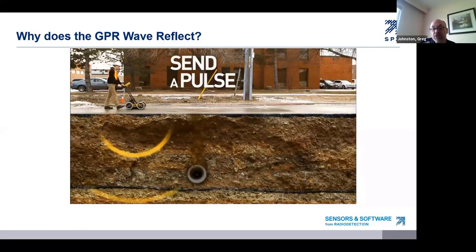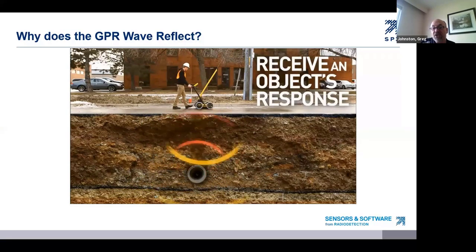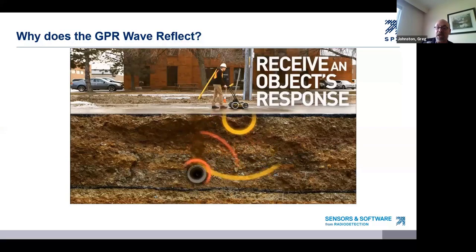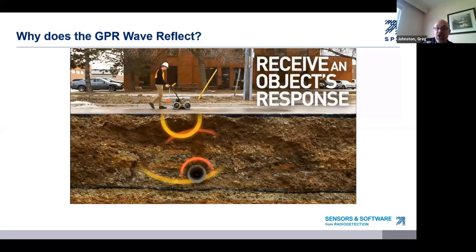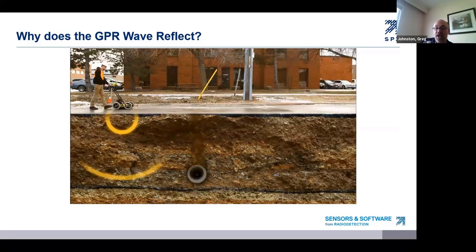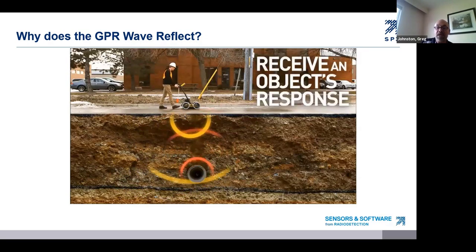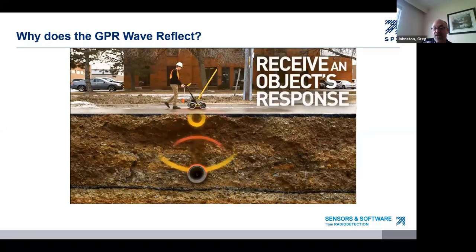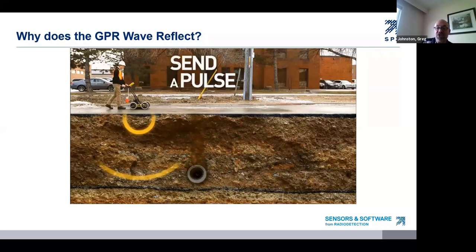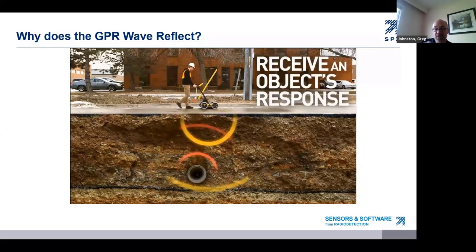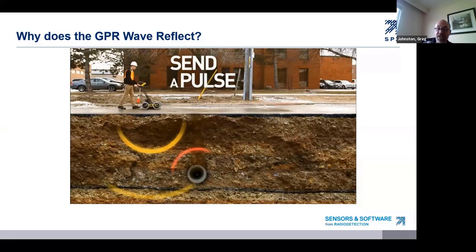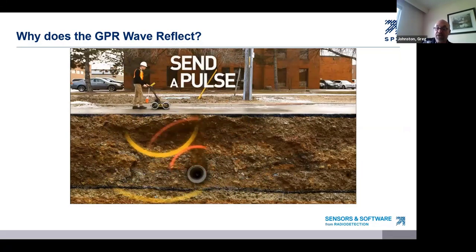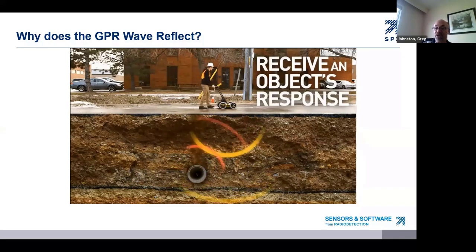Now, why does the GPR pulse reflect from a subsurface object? GPR waves reflect when there is a contrast of materials — specifically a contrast in a material property called the dielectric permittivity. It is only important to understand that a change in this property is what causes GPR energy to reflect. We understand this concept intuitively: the reason we see objects is because they contrast with the air around us. The light reflects off them and into our eyes. GPR waves do the same thing in the subsurface.